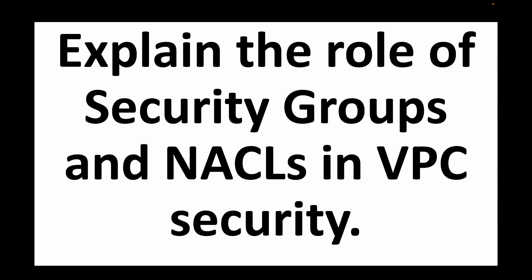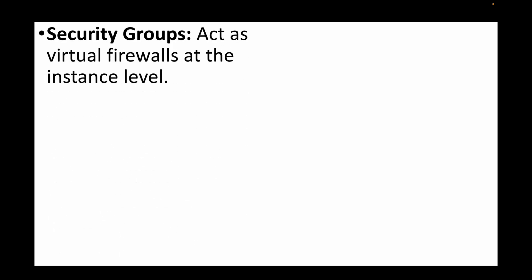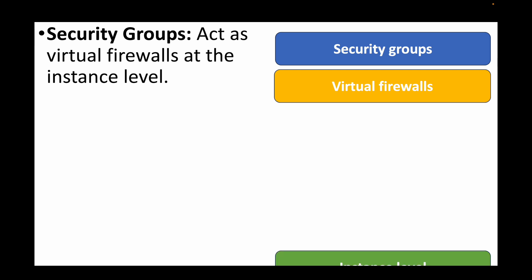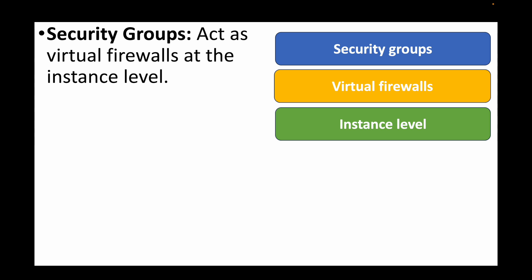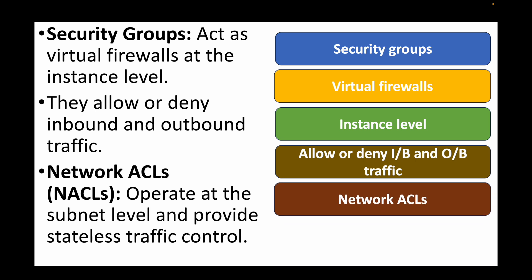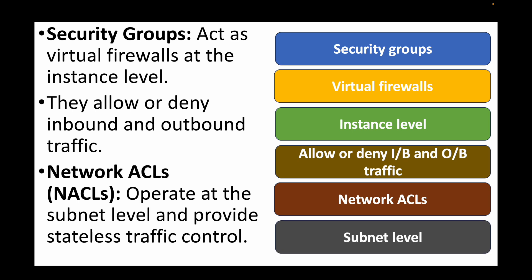The next question is: explain the role of security groups and NACLs in VPC security. Security groups act as a firewall at the instance level, controlling both inbound and outbound traffic. NACLs (Network Access Control Lists) also act as a firewall, but they operate at the subnet level and provide stateless traffic control — meaning they inspect traffic in both directions independently. Security groups are at the instance level; NACLs are at the subnet level.